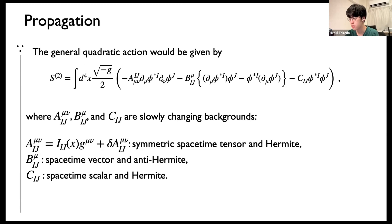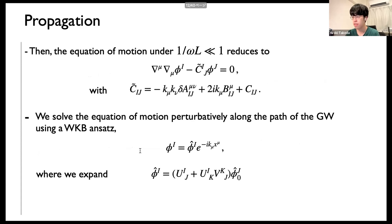Under these assumptions, we can conclude that the amplitude of polarization modes may change, but that of the energy flux hardly changes during propagation. To prove this statement, the general quadratic action is given like this, with a quadratic part, B part, and C part. A, B, and C are slowly changing background quantities. A must be a symmetric space-time tensor element, B must be a space-time vector antisymmetric element, and C must be a space-time scalar element. The equation of motion under the adiabatic condition reduces to this form, where C represents background quantities. We solve this equation of motion perturbatively along the path of the gravitational wave using the WKB approximation.